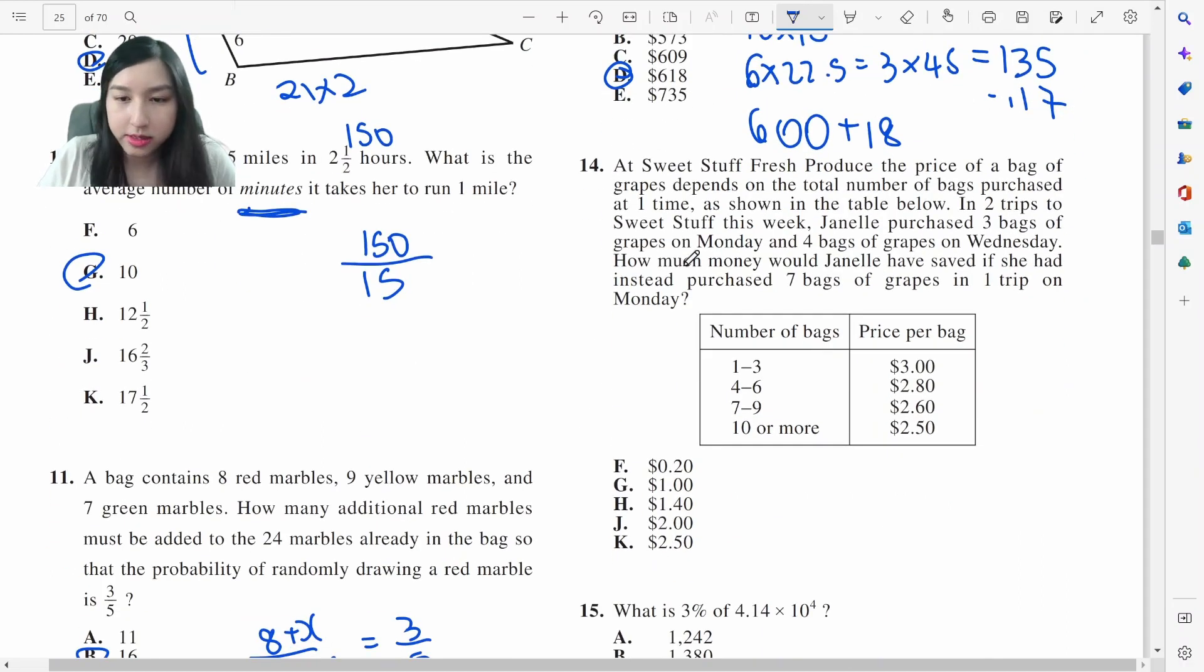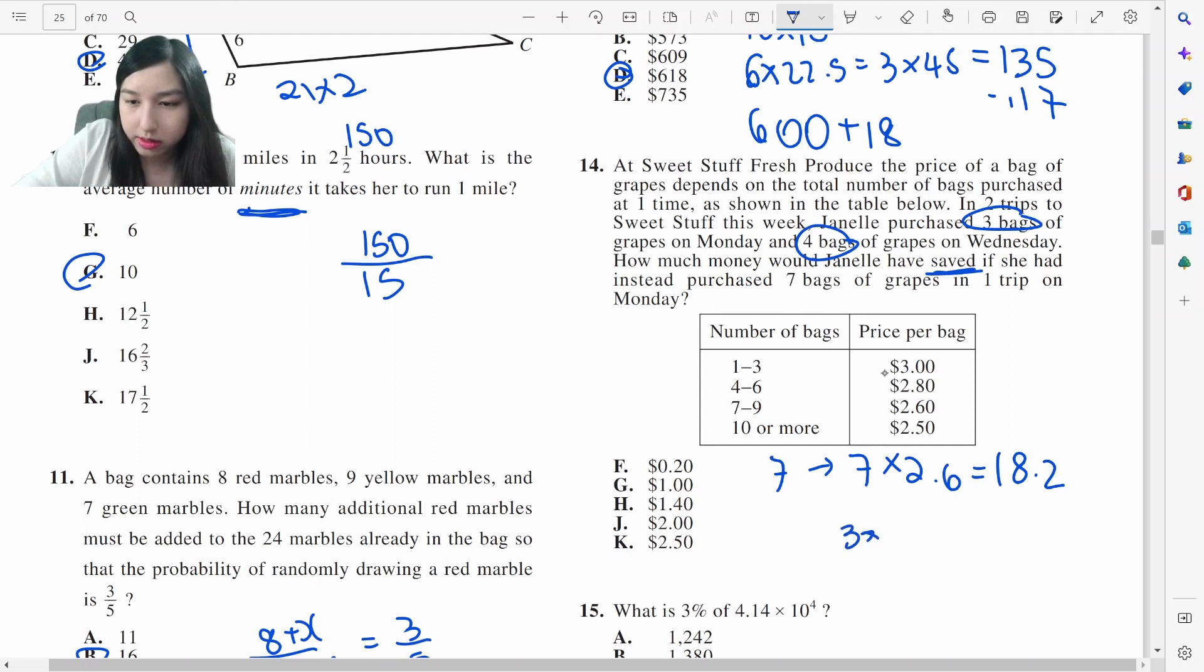How much would she have saved if she purchased 7 bags of grapes in one trip instead? If she buys 7 bags, 7 times $2.60 is going to be $18.20. Now, she purchased 3 bags on Monday and 4 bags on Wednesday. For 3 bags, 3 times 3 is 9. 4 bags, 4 times 2.80 is 11.20. This adds up to 20.20. So she would have saved 2 dollars.